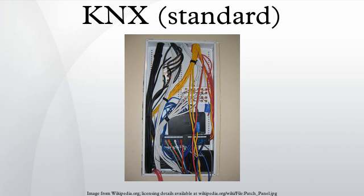KNX allows different bus topologies: tree, line and star topologies. These topologies can be mixed as needed. However, ring topologies are not allowed. The tree topology has advantages over other topologies in cases where a large network has to be created.